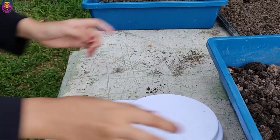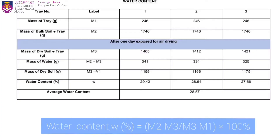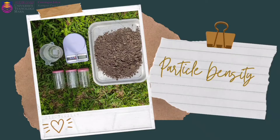Last but not least, the mass of the tray after drying is recorded, which is 1,405 grams. The water content is defined by the ratio of the weight of water to the weight of the solids in a given mass of soil, usually expressed as a percentage. The table shows all the data collected. For the calculation, the mass of water is obtained by subtracting M2 with M3, and the dry soil mass by subtracting M3 with M1. Water content is then determined by dividing the mass of water by the mass of dry soil and multiplying by 100%. Finally, the average water content is calculated for more accurate results.